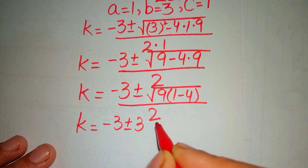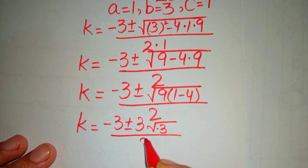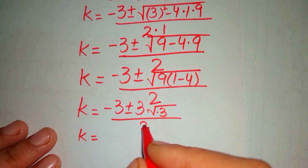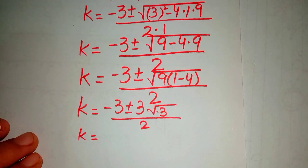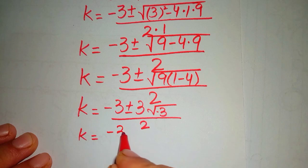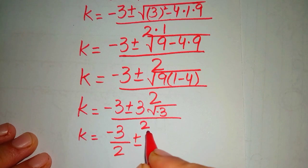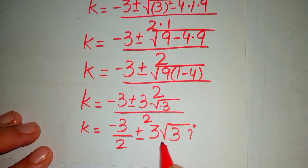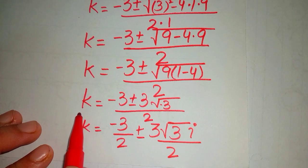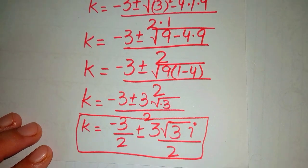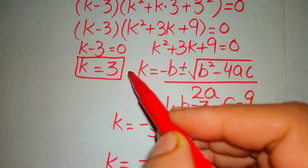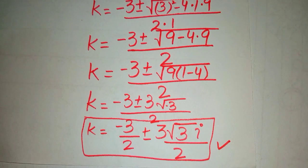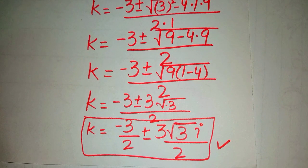Since the square root of 9 is 3, we write it as plus or minus 3 times the square root of negative 3, over 2. This gives us minus 3 over 2 plus or minus 3 times the square root of negative 3 over 2, which involves the imaginary unit. So k equals 3 is our real solution, and the complex values are our other solutions. Thanks for watching — please subscribe to my channel for more exciting videos.